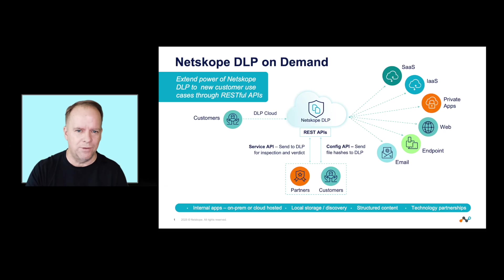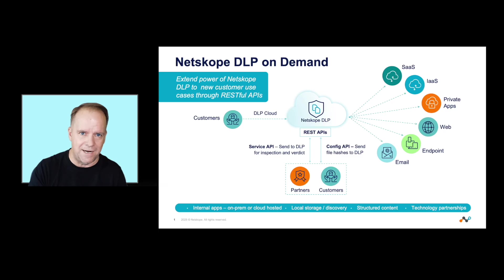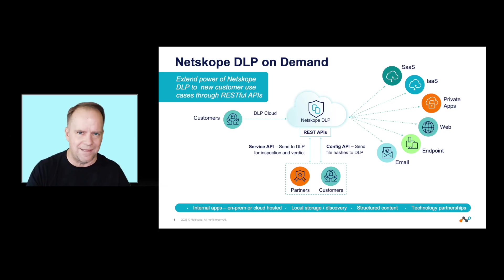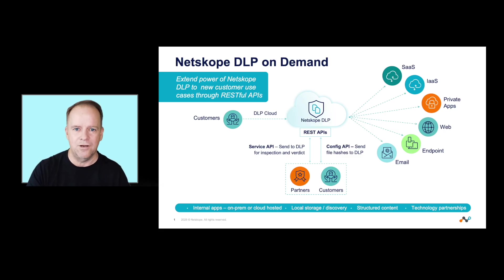You can build it into your application and use the APIs. Think about this for a moment — you're basically taking the power of Netscope's DLP with 3,000 data identifiers, 2,000 file types, all of the AI classifiers, and all of the enterprise-grade functionality, and now you can bring that into your own environment to utilize the service and get a verdict on the data that you're looking at.